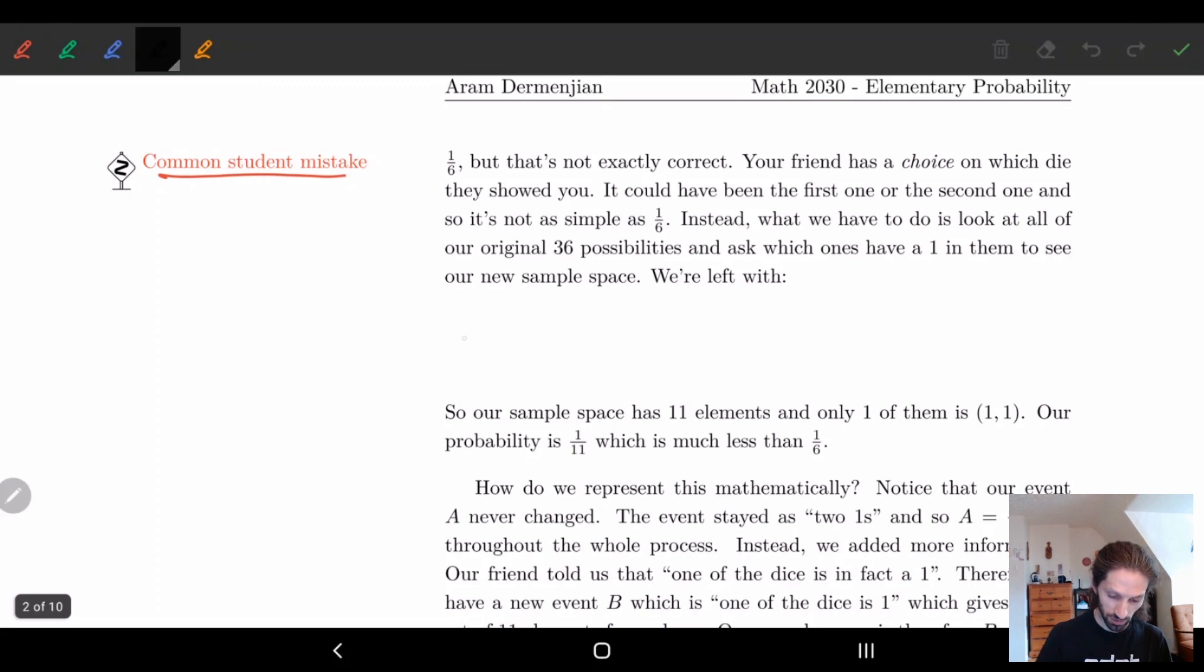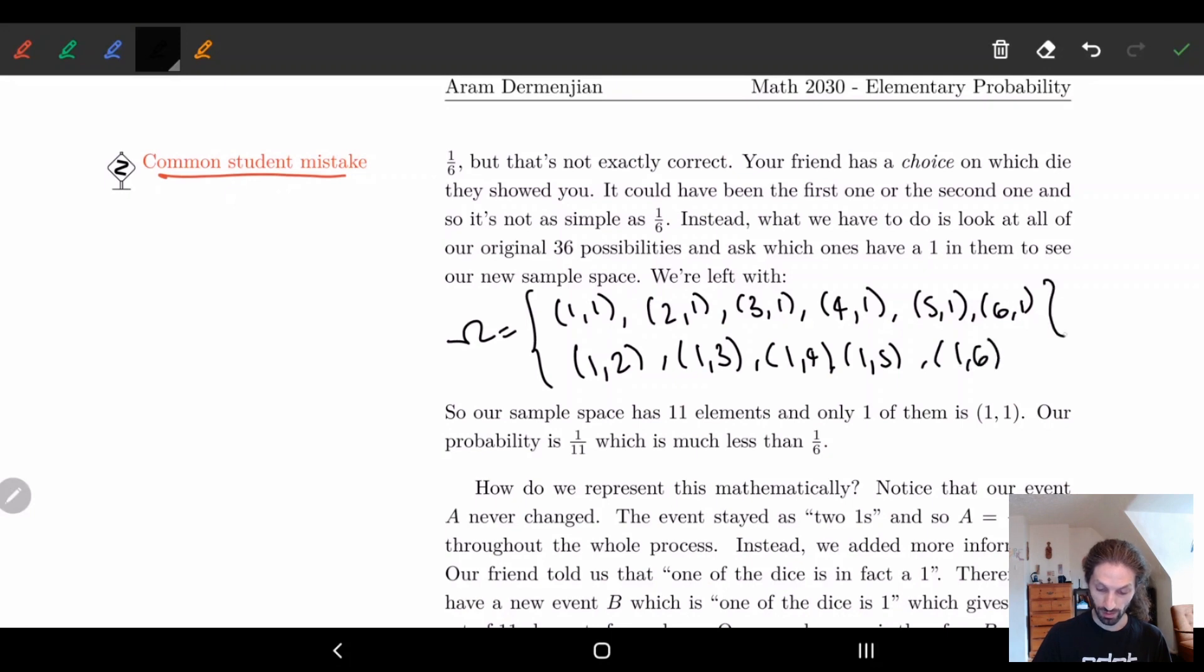So our new sample space is going to be this new set. So obviously we have (1,1) just as before. But again we can have one in the second column. Or we can have one in the first column. So we already have (1,1) there so we won't repeat it. And (1,6).